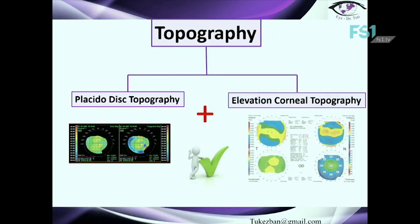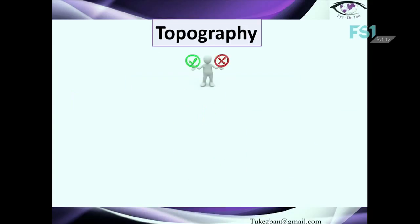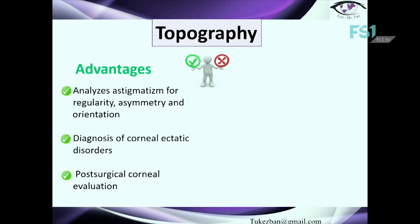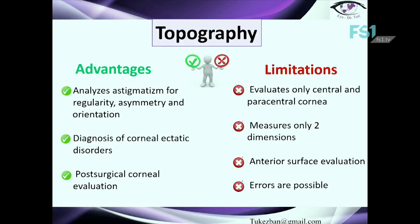Next is topography. When we talk about topography we mean Placido disc topography and elevation corneal topography. Its advantages are that it analyzes astigmatism for regularity, asymmetry, and orientation; diagnoses corneal ectatic disorders; and provides enough information for pre- and post-surgical corneal estimation. Its limitations are that it evaluates only the central and paracentral cornea, measures only two dimensions, provides information mainly from the anterior surface, and errors are possible.